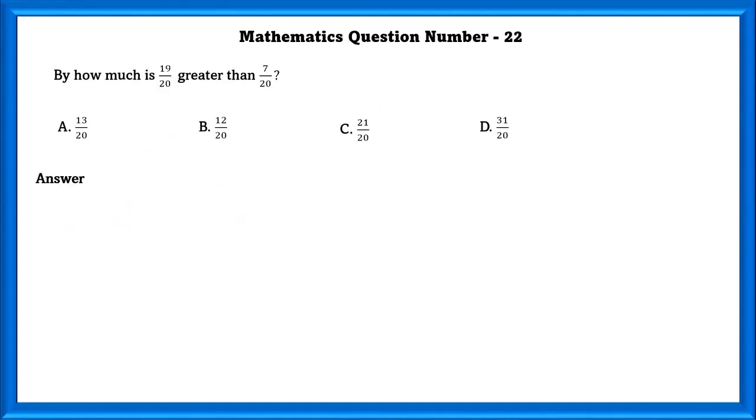Mathematics question number 22. By how much is 19 by 20 greater than 7 by 20? 19 by 20 minus 7 by 20 is equal to 12 by 20. So if we add 12 by 20 to 7 by 20, we will get 19 by 20.